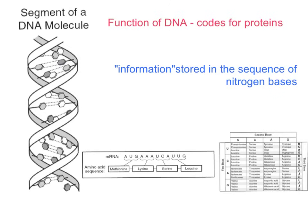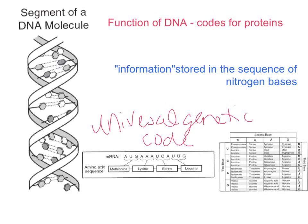The universal genetic code states that all organisms use the same code for their proteins. Looking at this picture, I have some messenger RNA that comes from the DNA. The DNA strand tells the messenger RNA what it should look like. The messenger RNA strand is then turned into amino acids — our monomer for proteins — so when I link all those amino acids together, I end up with a protein.